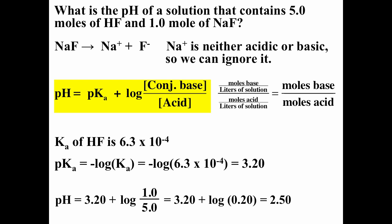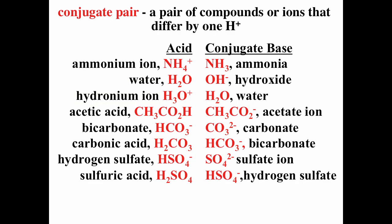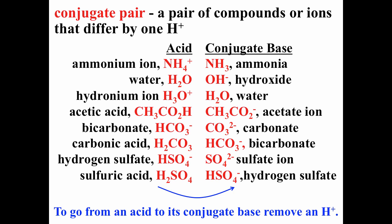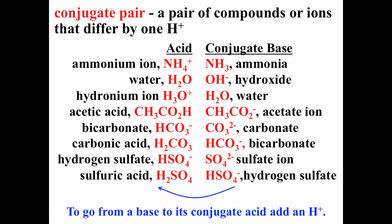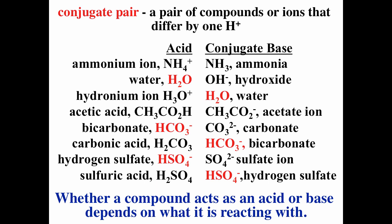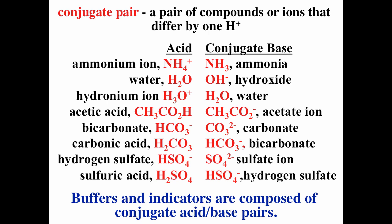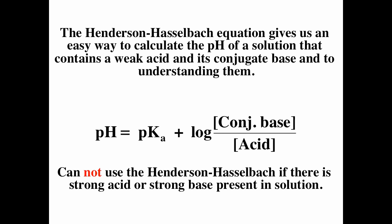The Henderson-Hasselbalch equation is very helpful for calculating pH, for calculating ratios of base to acid, and for choosing pKa values of buffers. It also helps us understand solutions: the pH of a weak acid/conjugate base solution is dominated by the pKa and adjusted by the ratio. Remember, the Henderson-Hasselbalch equation is only appropriate for weak acid/conjugate base pairs — you cannot use it if a strong acid or strong base is present. To go from the acid to the base, remove a proton; to go from the base to the acid, add a proton. All buffers and indicators are weak acid/conjugate base pairs. I hope this was helpful.